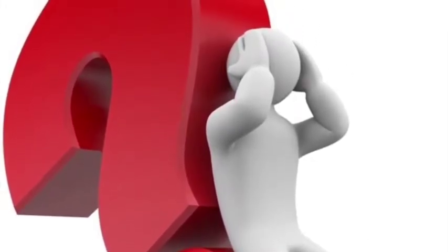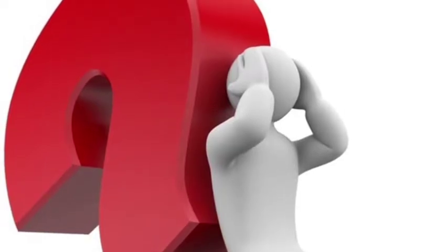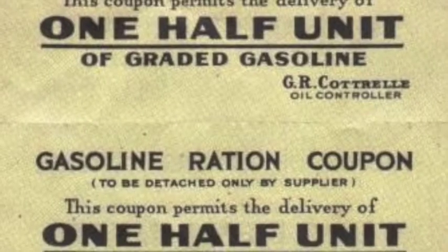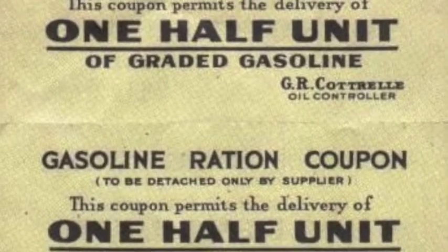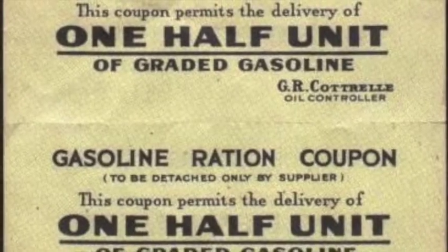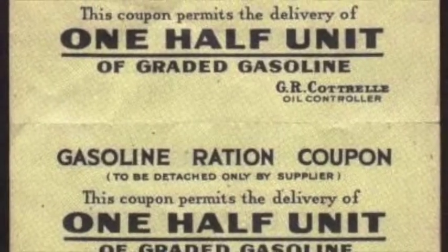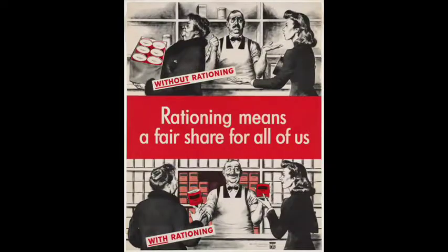So if we accept that these inputs and outputs are scarce and thus cannot satisfy our limitless desires, the question becomes: how do we allocate these goods and services? How do we economize? The thing in our societies that determines how we economize, how we choose to allocate, is called the rationing function. Sometimes this is government, sometimes something else, sometimes a kind of government.